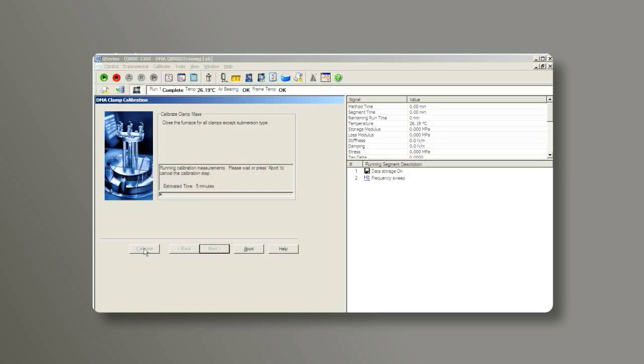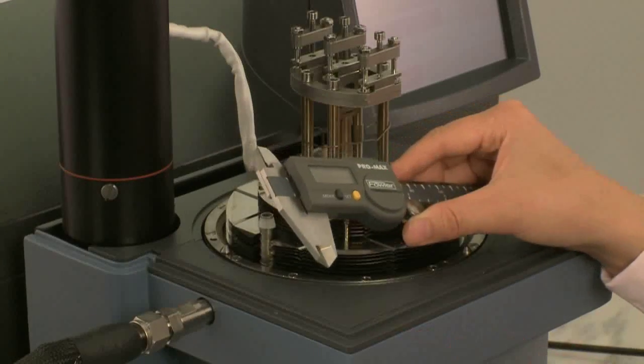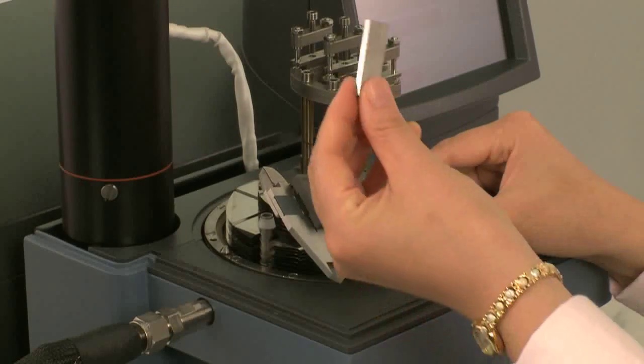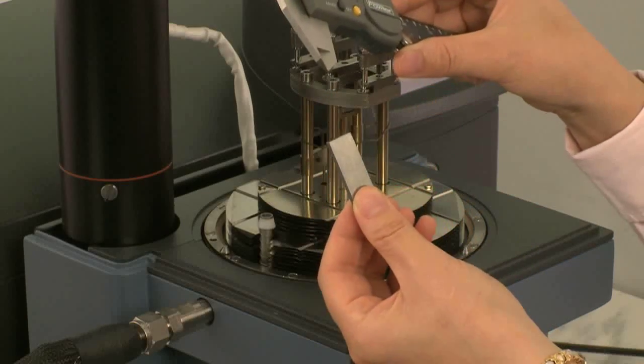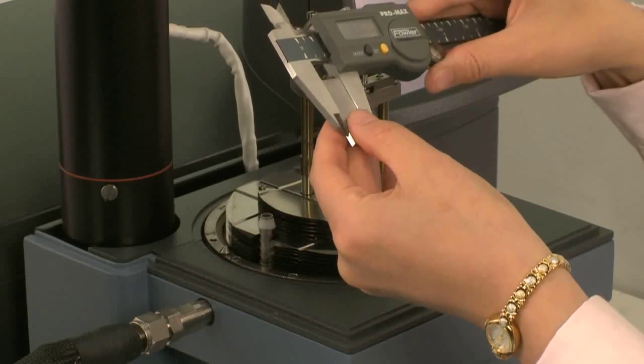This first calibration step is to calibrate the mass of the movable clamp. For clamp compliance calibration, take the stainless steel bar from the clamp kit. Use a caliper to measure its width and thickness.